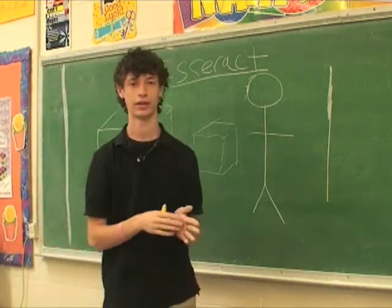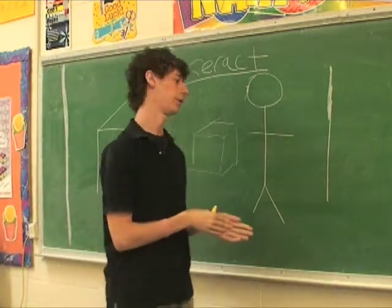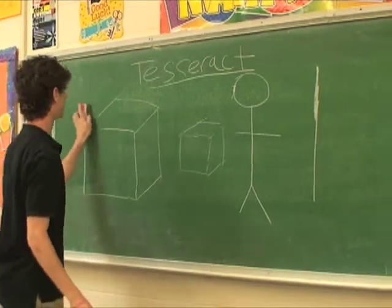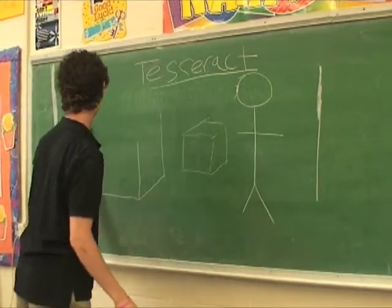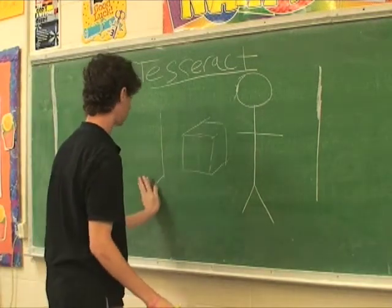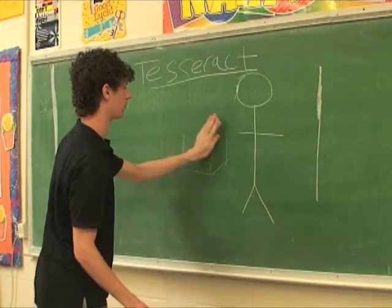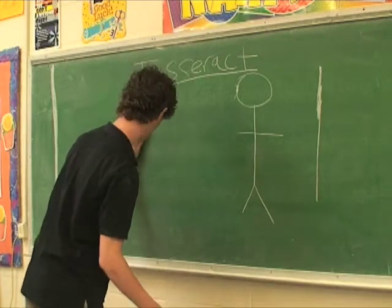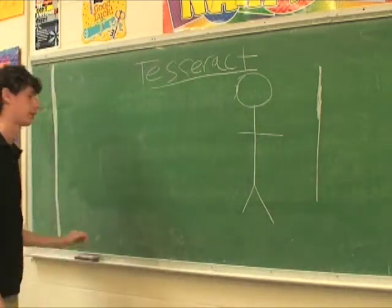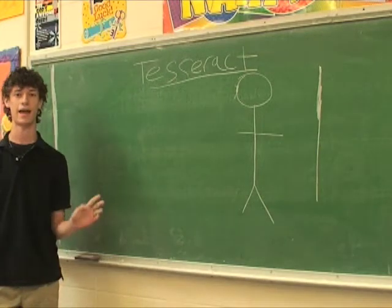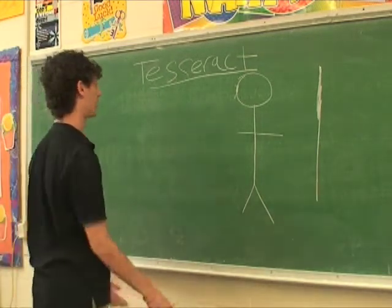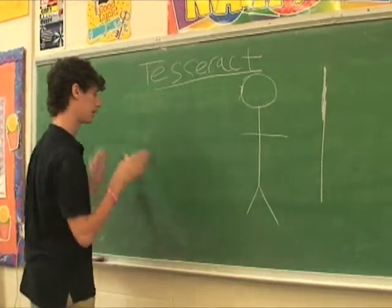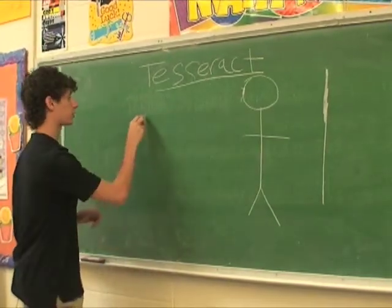Dali — a famous artist and surrealist — created a painting that actually depicted a certain view of this tesseract called 'Corpus Hypercubus,' or 'Christ.' It's in the Metropolitan Museum of Art in New York City if you're interested in seeing it, or you can Google it. He used what's called the net view of the tesseract. So let's talk about the net view of a cube in three dimensions first, before we get any more crazy.